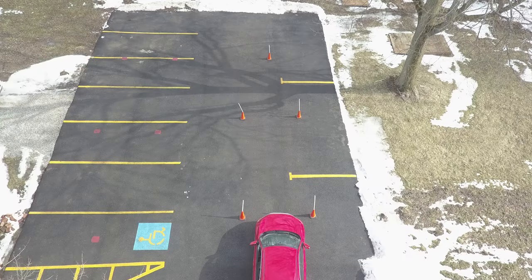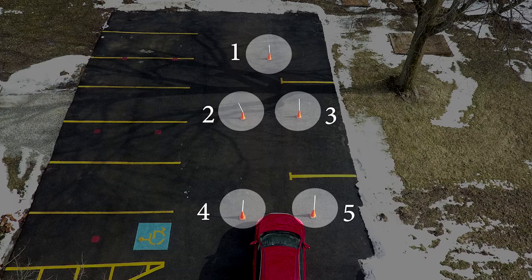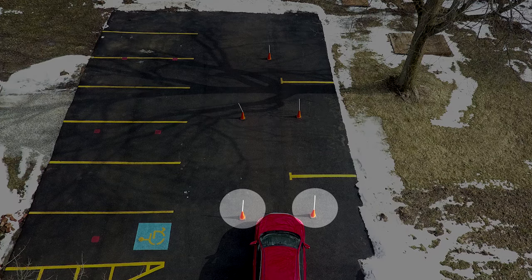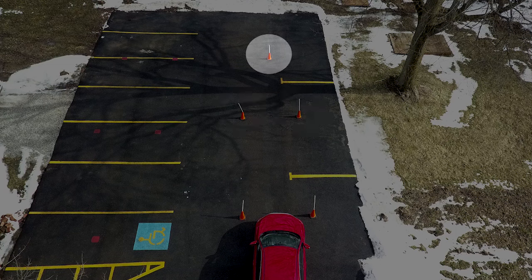Before we begin, let's understand the course itself. You've got five cones: two in the back, which we will call the back cones; two in the middle, that are called the middle cones; and the one in the front, which is called the front cone or point cone.